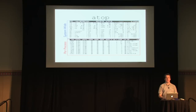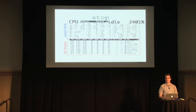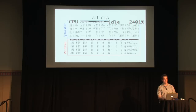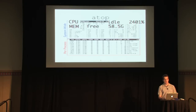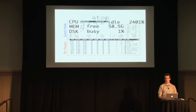The statistics we're looking at are the most straightforward system-wide metrics: CPU utilization — this system has 24 logical processors and it's idle 2400% of the time (24 × 100). Memory: 64 GB of RAM, 58.5 GB free. And the disk is busy only 1% of the time. So clearly there's not a whole lot going on at baseline.